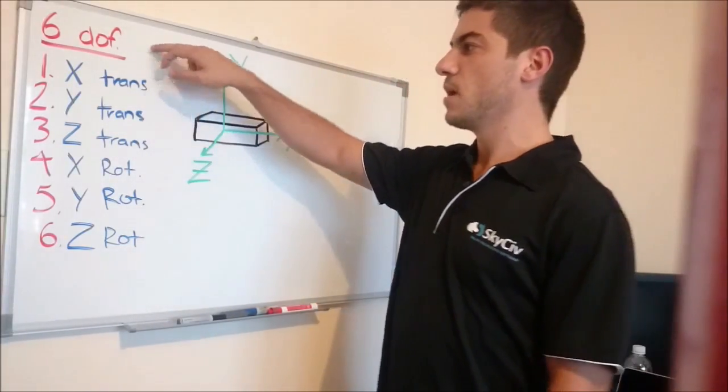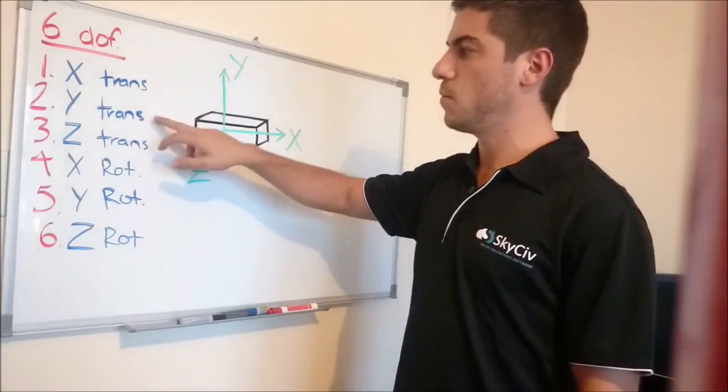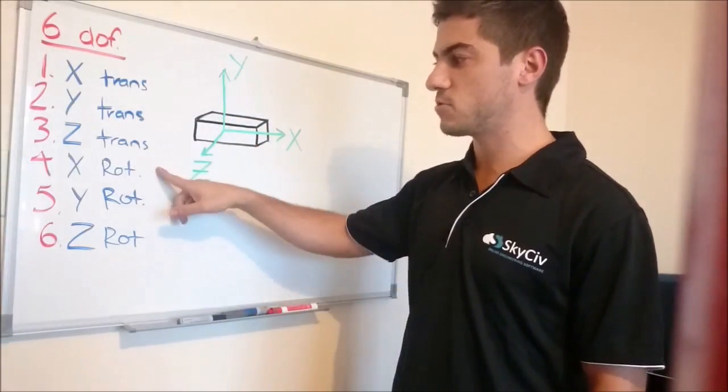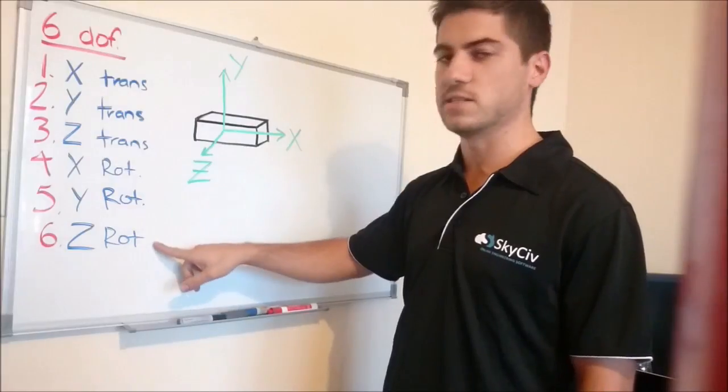So what are the 6 degrees of freedom? First we have the X translation, Y translation, Z translation, and we have X rotation, Y rotation, and Z rotation.